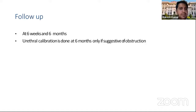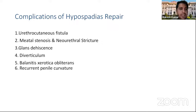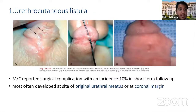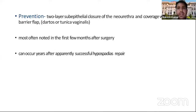Follow-up is at six weeks and six months; urethral calibration is done at six months only if there is suggestion of obstruction. Risk factors for complications include older age at repair, proximal meatal location, glans width less than 14 mm, and the surgeon's learning curve. Most common complications are urethrocutaneous fistula, meatal stenosis, urethral stricture, glans dehiscence, balanitis xerotica obliterans, and recurrent penile curvature. UCF is seen in 10% of cases and most commonly develops at the original urethral meatus site.